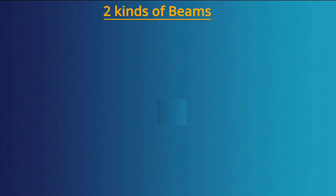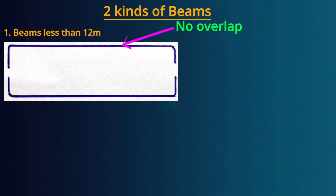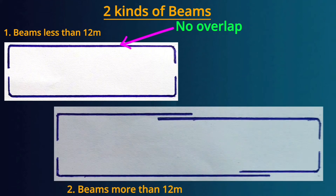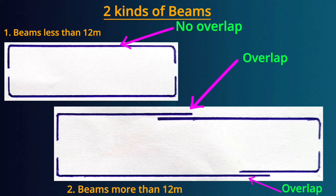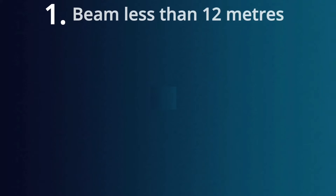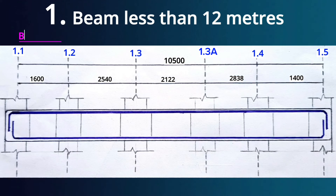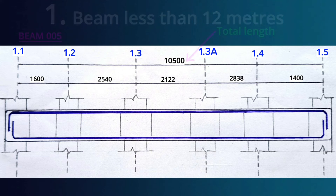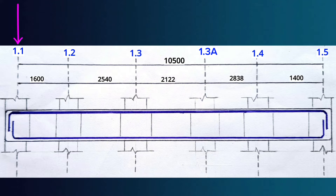We are going to look at two kinds of beams: beams less than 12 meters long that do not need to overlap the steel bars, and beams more than 12 meters long where steel bars are overlapped. Let's begin with a beam of less than 12 meters. This is beam 005. The total length of this beam is less than 12 meters, meaning it does not need overlapping. Beam 005 starts from gridline 1.1 to gridline 1.5, and this is the shape of the steel bars in the beam.